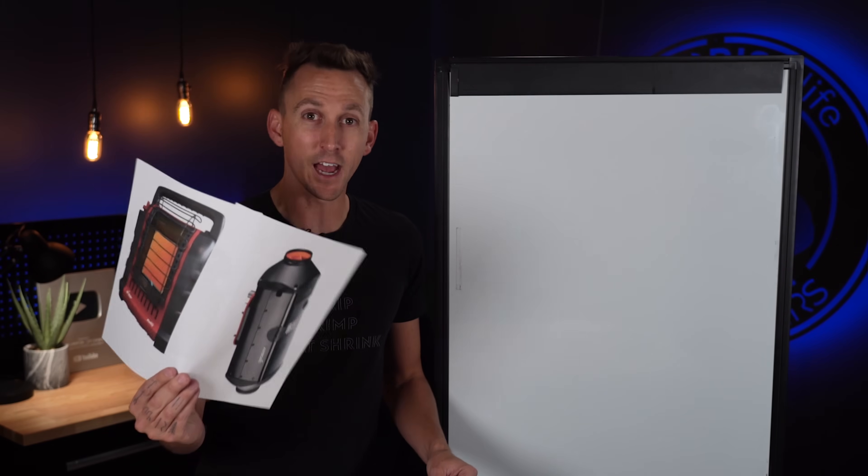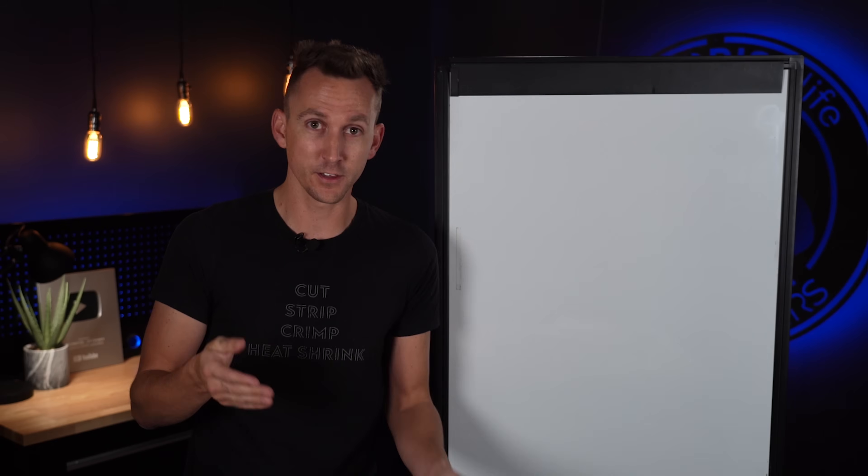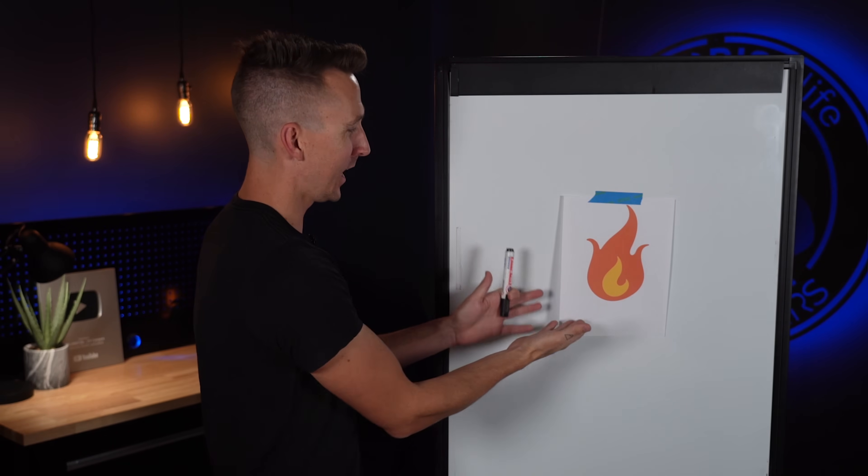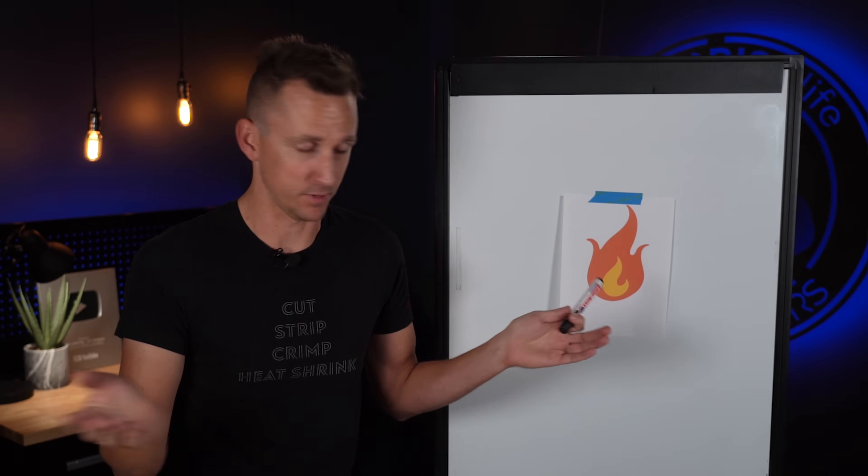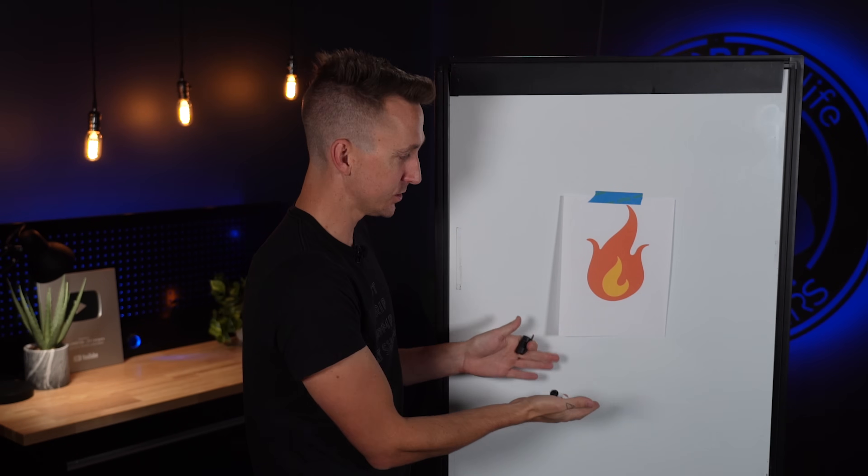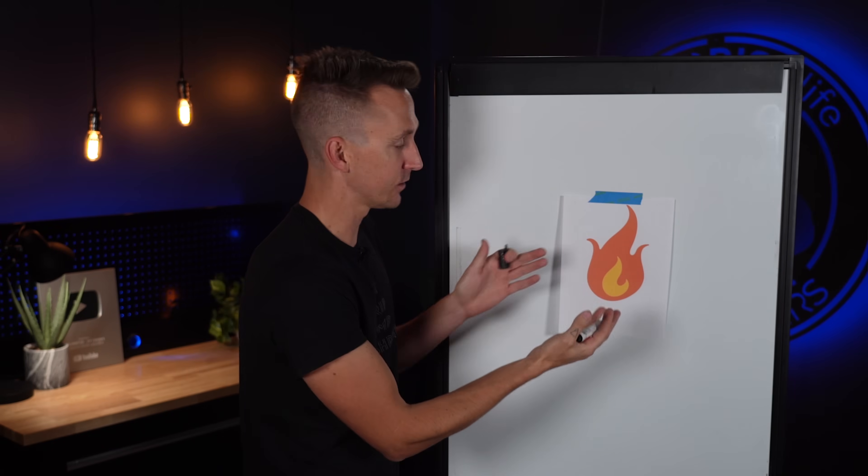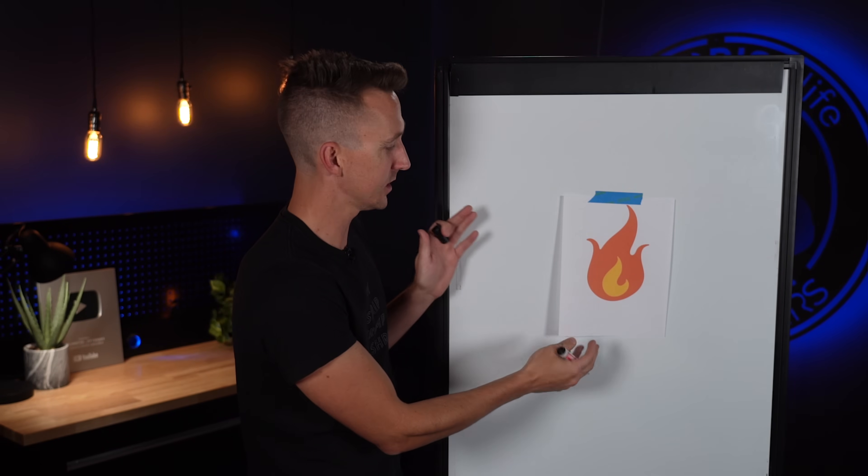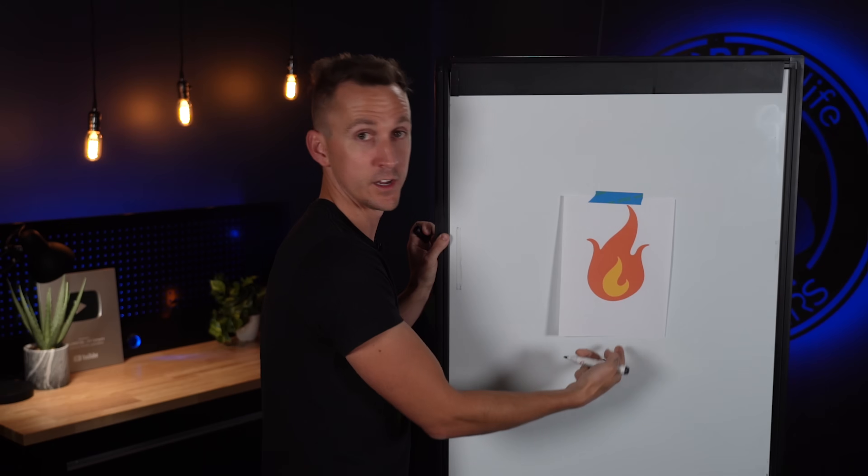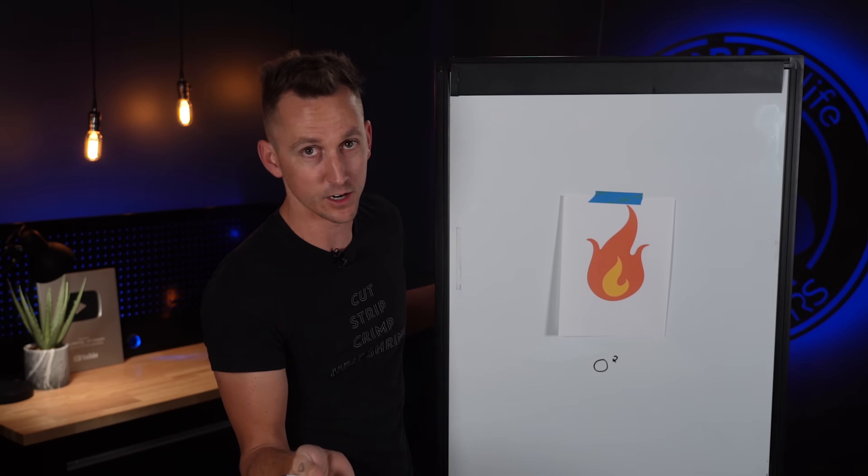So before we start talking about the actual heaters let's talk about fire. Now I have a really expensive piece of paper and a really cool hat that makes it so that I'm actually pretty qualified to talk about fire. When we have a fire that is burning something we have a few chemicals that are going into and coming out of the fire to support the combustion process. We're always going to have oxygen going into the fire. Fire has to have oxygen to burn.